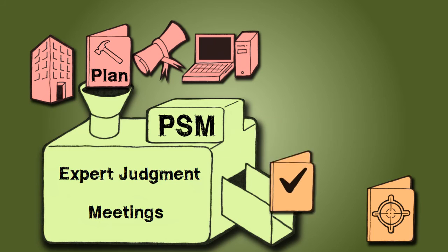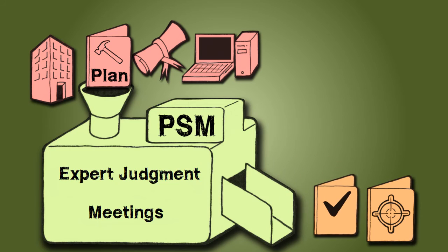The requirements management plan helps document and manage the requirements of the project management plan. It prioritizes the activities and helps the project manager trace, track, document, and report the project's requirements back to the stakeholders and back into the project management plan.